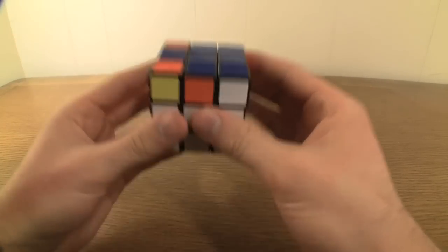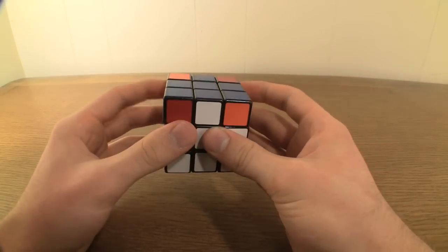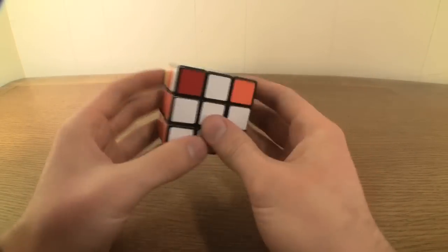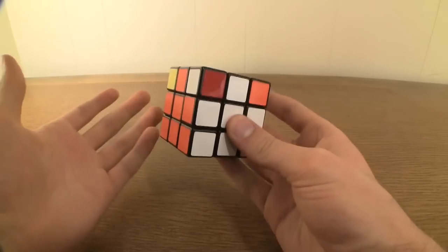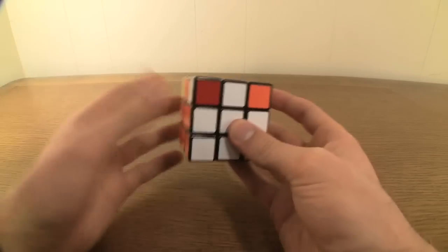If they aren't, however, twist the up face 90 degrees and check again. Keep doing this until either A, you get two edges to line up, or B, you're confident that you can't get two edges to line up by just twisting the up face around.